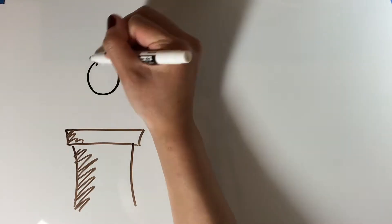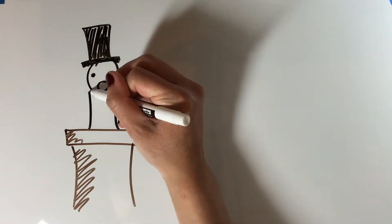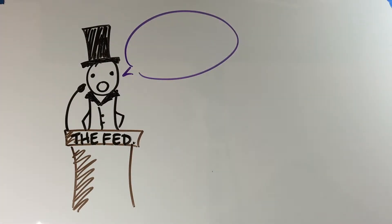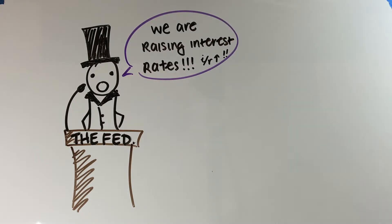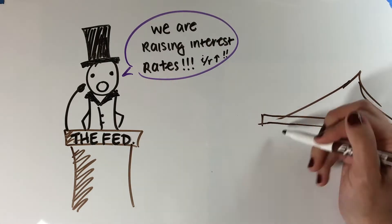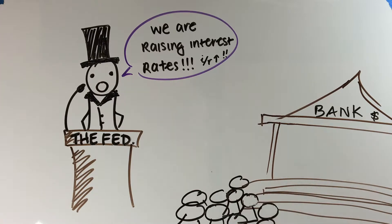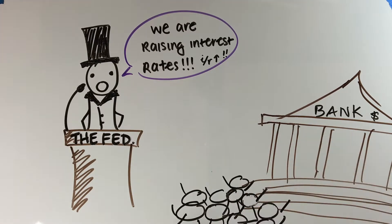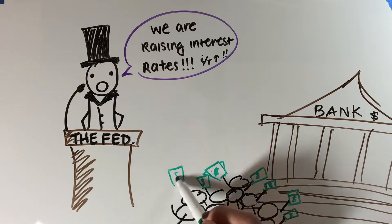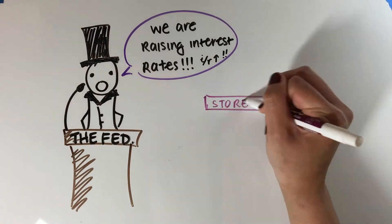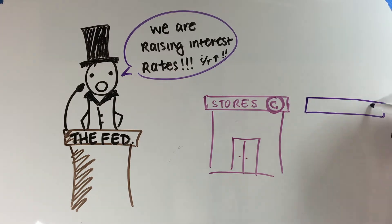The Fed should respond to the rising inflation by enacting contractionary monetary policy. To do this, they should raise the interest rates slightly. Higher interest rates will decrease gross private investment and domestic consumption. This leads to lower aggregate demand and lower inflation. The same effect could be accomplished by selling bonds on the open market if changing interest rates aren't effective.